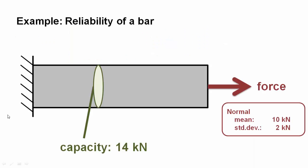Let's consider this simple example of a bar. This problem has only one basic random variable: the load that is applied onto the bar. It follows a normal distribution with mean 10 kN and standard deviation 2 kN. The capacity of the bar is assumed fixed at 14 kN. Note that often the loading is the dominating source of uncertainty in our models — the uncertainties in the material parameters are often considerably smaller than the uncertainties in the loading.